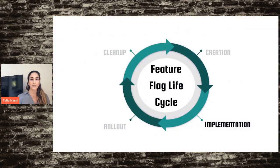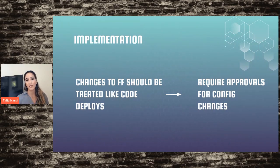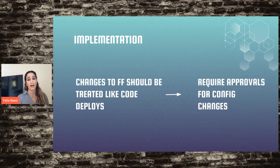The next step is implementation. One big thing: changes to your feature flags should be treated like code deploys. If you require two code reviews before merging to master, you should also have two code reviews for any configuration changes to your feature flags. Although you're not writing code in the feature flagging system itself, the changes directly impact users in production, and this approval process prevents people from making changes to flags they don't own.